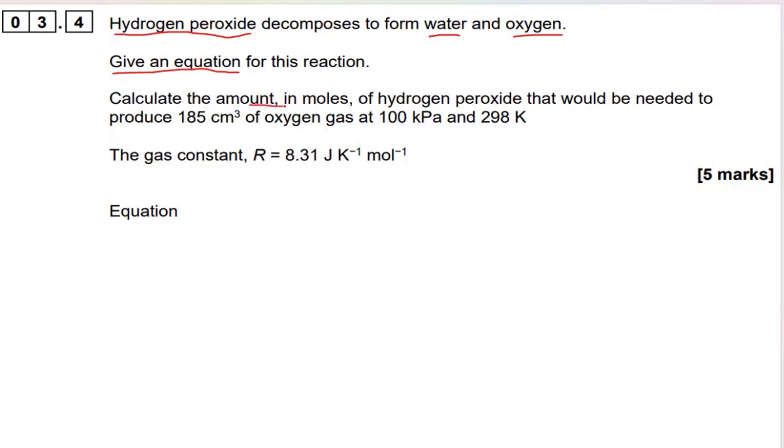Calculate the amount in moles of hydrogen peroxide that would be needed to produce 185 centimeter cubes of oxygen gas at 100 kilopascals and 298 Kelvin. The gas constant is 8.31. As soon as you see that 8.31, R is 8.31, you see the volume of gas, you know you're doing the ideal gas equation here. It's really useful to highlight parts of the question, so I recommend in exams always using a highlighter so you don't miss any of the numbers or the key parts.